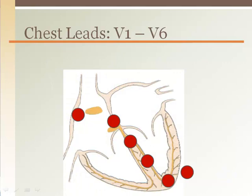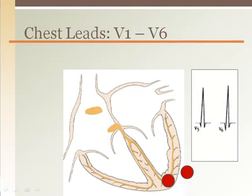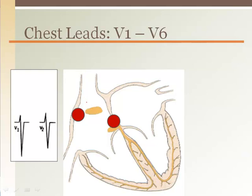Consider the depolarization sequence of the interventricular septum from the bundle of His down through the bundle branches. Any depolarizing impulse traveling toward a positive electrode will result in a positive wave, but a depolarizing impulse traveling away from a positive electrode will result in a negative wave or deflection on the recording strip. For example, looking at V5 and V6 at the apex of the heart, the depolarization down the interventricular septum is coming toward V5 and V6 the whole time, so the resulting wave would be positive. In contrast, V1 and V2 are looking at the heart from above the interventricular septum, and the entire septal depolarization pathway is away from those electrodes, resulting in a negative waveform.